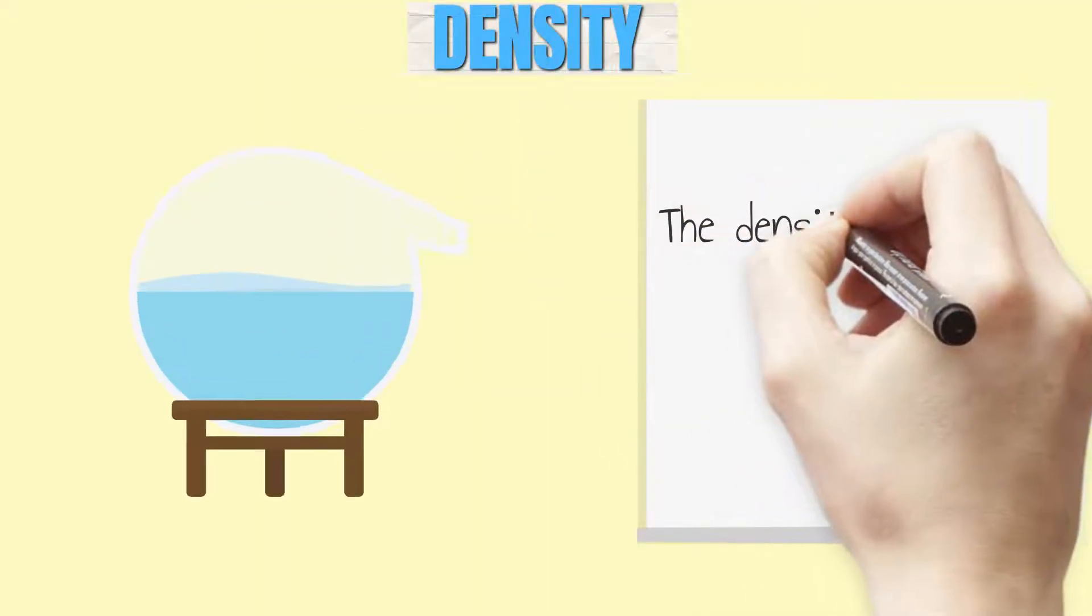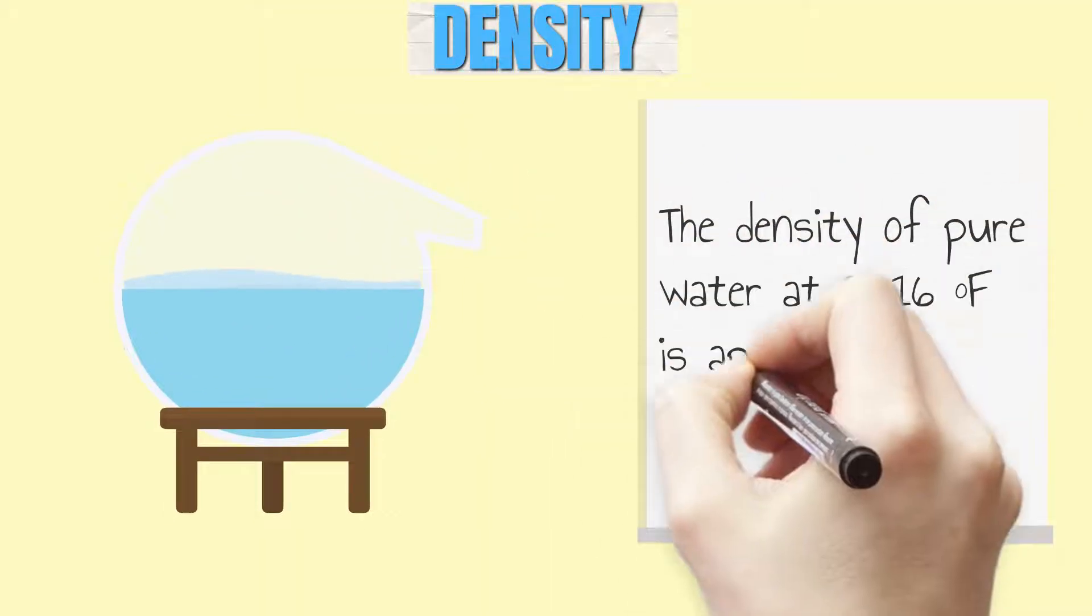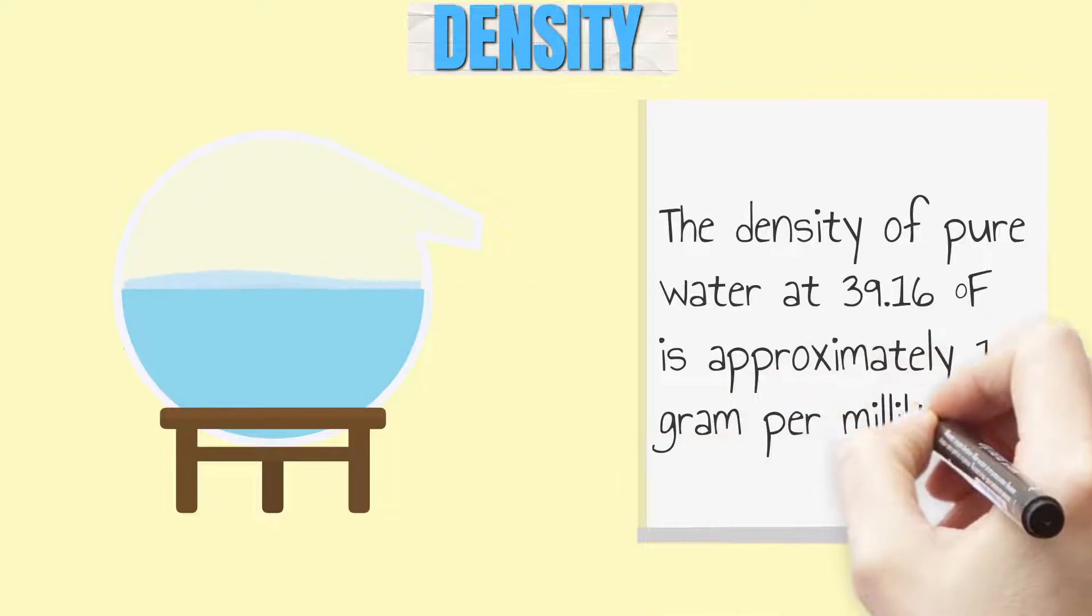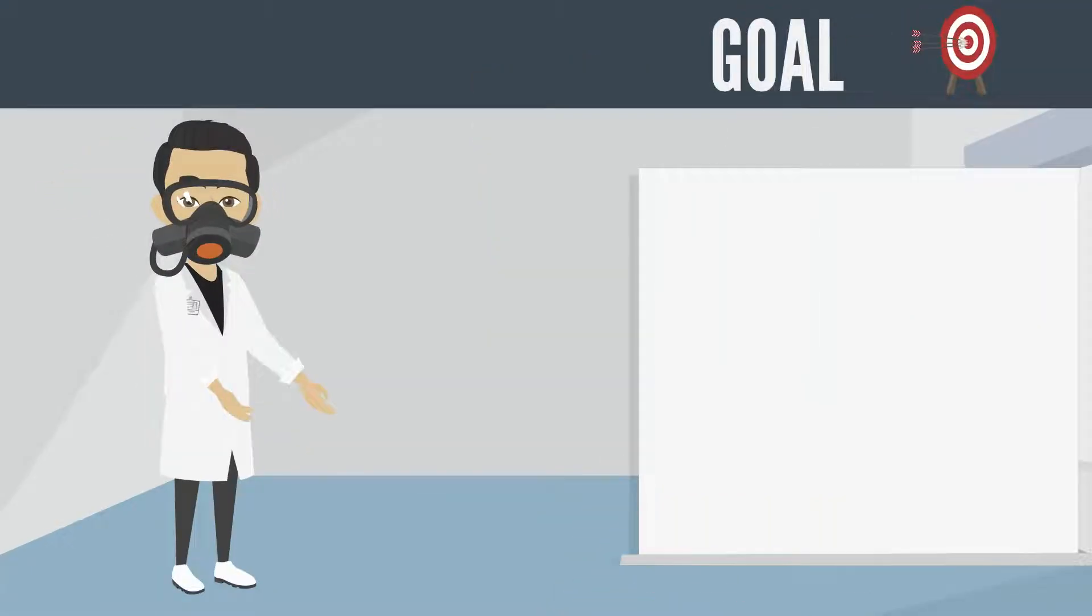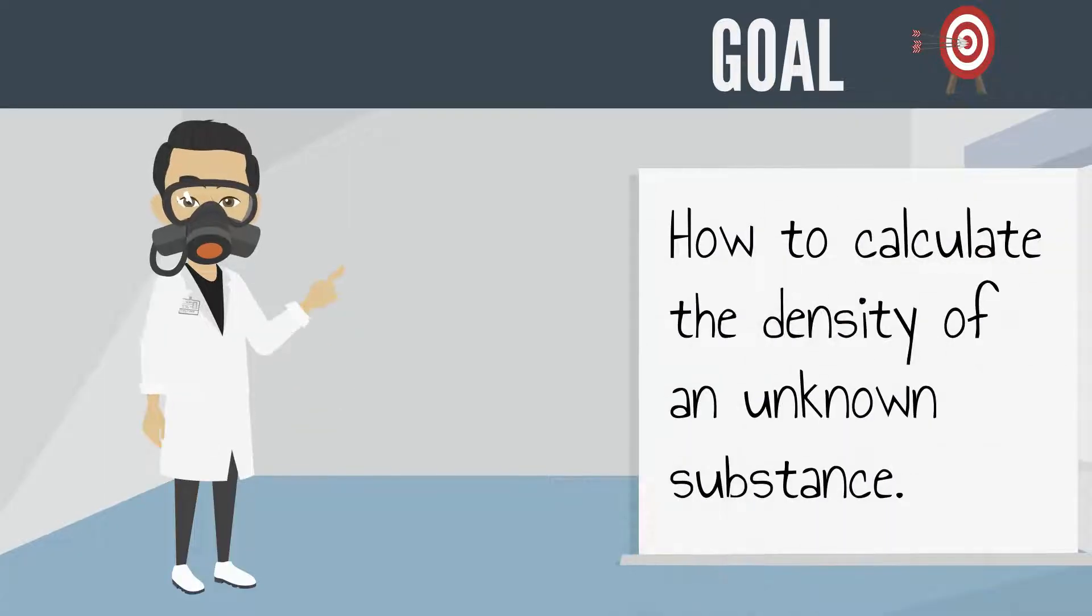Did you know that density of pure water at 39.16 degrees Fahrenheit is approximately one gram per milliliter? Hey everyone! This is Mr. Lara and in today's video I'm going to show you how to calculate the density of an unknown substance.